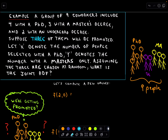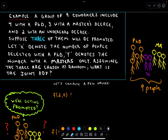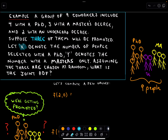One more example of joint density functions. We've got a group of nine co-workers: four of those people have a PhD, three have at most a master's degree, and two have at most an undergraduate degree. Suppose three of those people are going to get promoted. We let X denote the number of people selected with a PhD and Y denote the number selected with at most a master's. Three are chosen at random. We want to know the joint PDF.